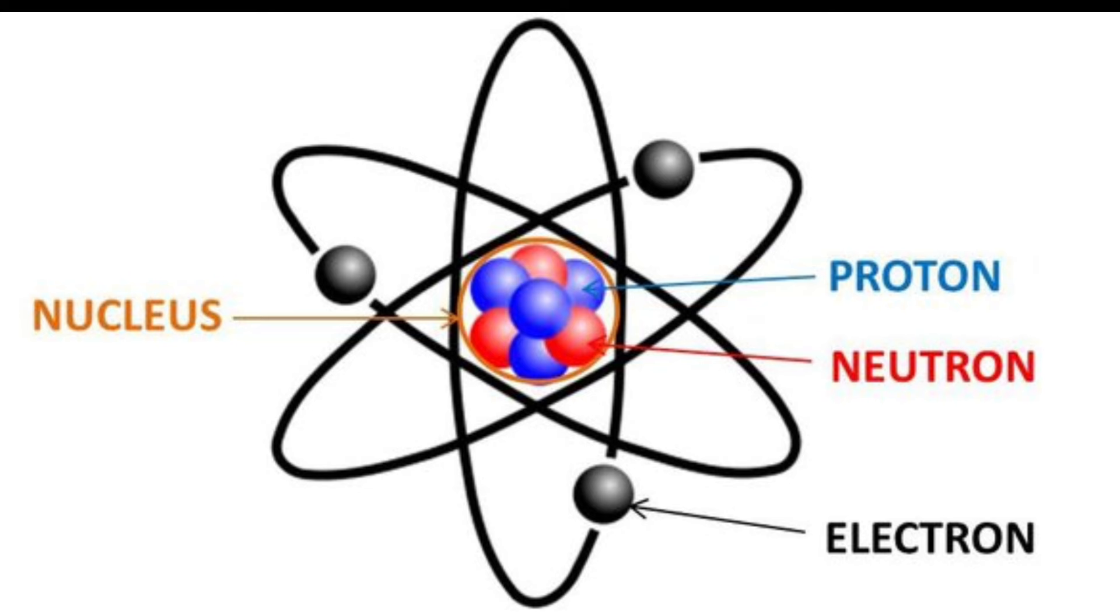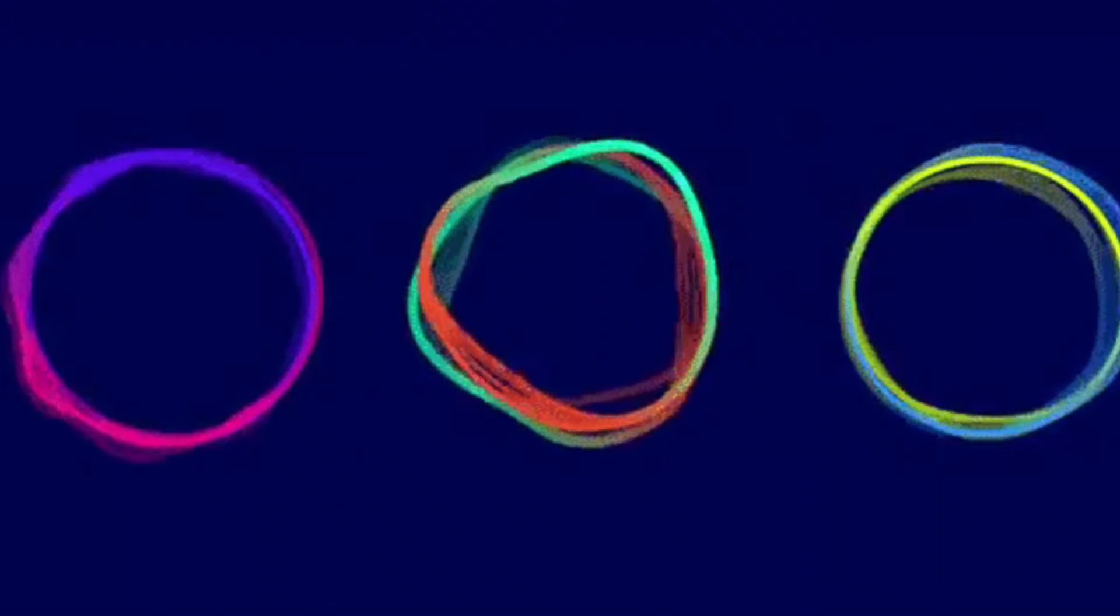You probably know that everything in the world is made of tiny particles called atoms, and that atoms are made of even smaller particles called protons, neutrons, and electrons. But what are these particles made of? Are they the smallest units of matter, or can they be divided further?